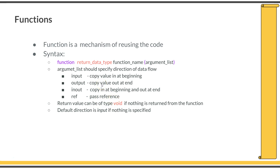The difference between pass-by-value and pass-by-reference is that in the input, output, and inout cases, the variables inside the function and the variables at the call site are entirely separate — the function copies values from the actual arguments. But with pass-by-reference, the exact same variable or pointer is passed into the function, so any change made within the function also affects the calling variable. This mechanism is called pass-by-reference.